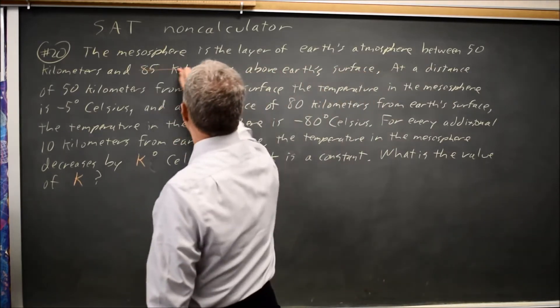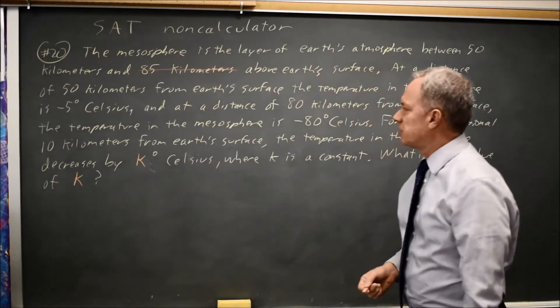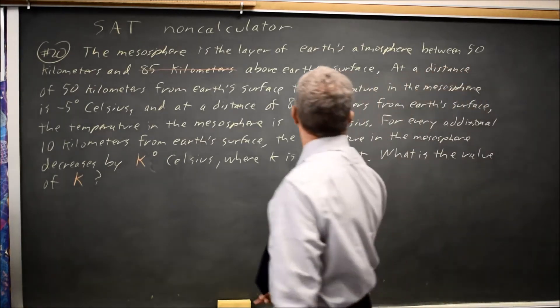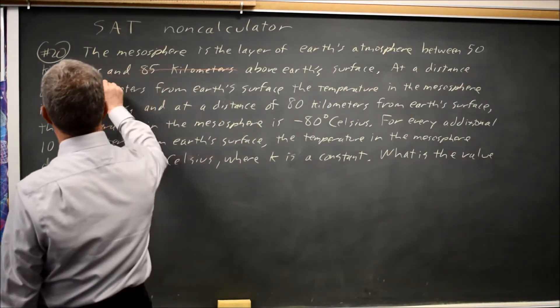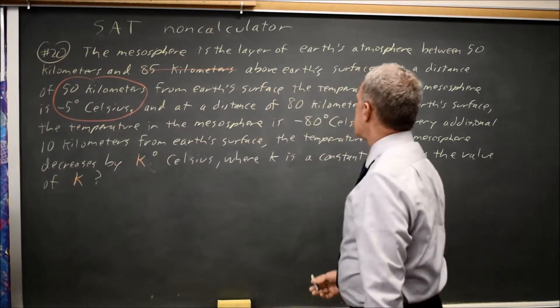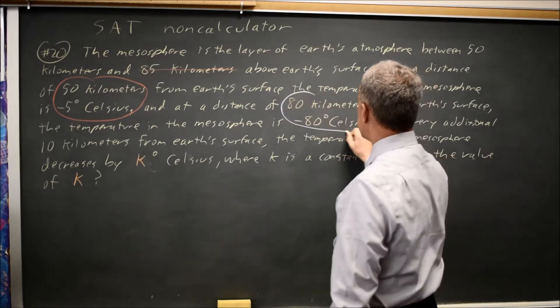We don't care about this 85 kilometers, so I'm going to cross it out so I don't inadvertently use that number. The important thing is, at 50 kilometers, the temperature is negative 5 degrees Celsius, and at 80 kilometers, the temperature is negative 80 degrees Celsius.